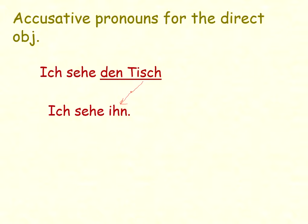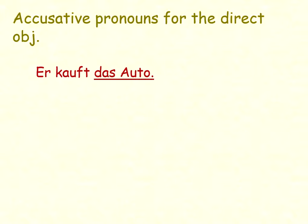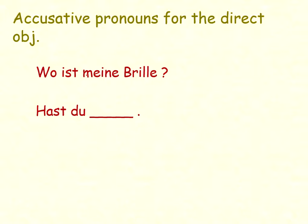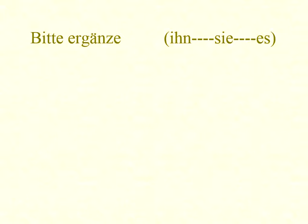Subject, verb, object. 'Er kauft das Auto' — 'er' is the subject, because the article is 'das' (neutral), it changes to 'es.' Now 'Sie heißt Monica' — we need to check the article. The article is 'sie,' so 'sie' changes to 'sie.' We fill in: 'ihn' is for masculine things, 'sie' is for feminine things, 'es' is for neutral things.